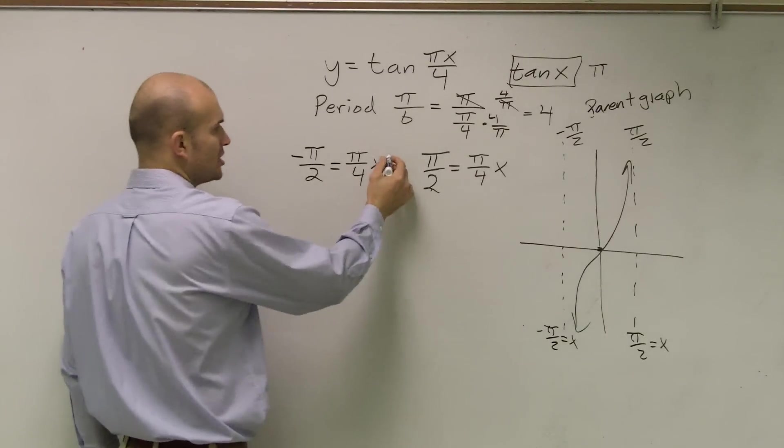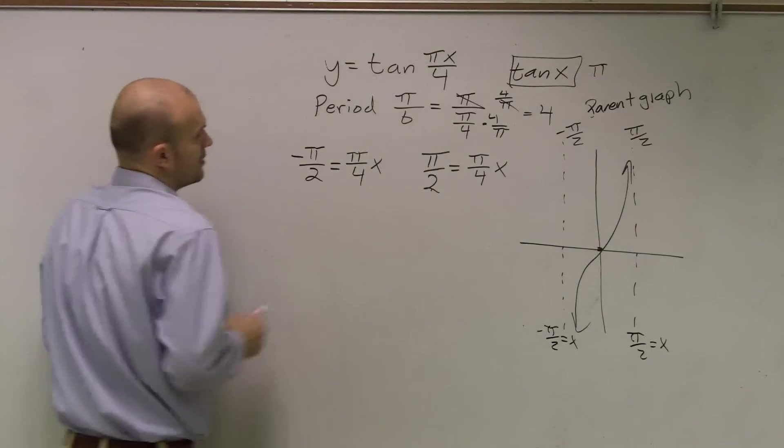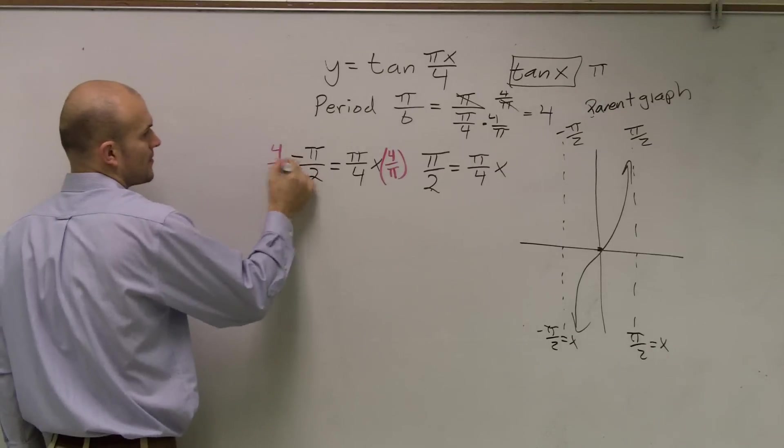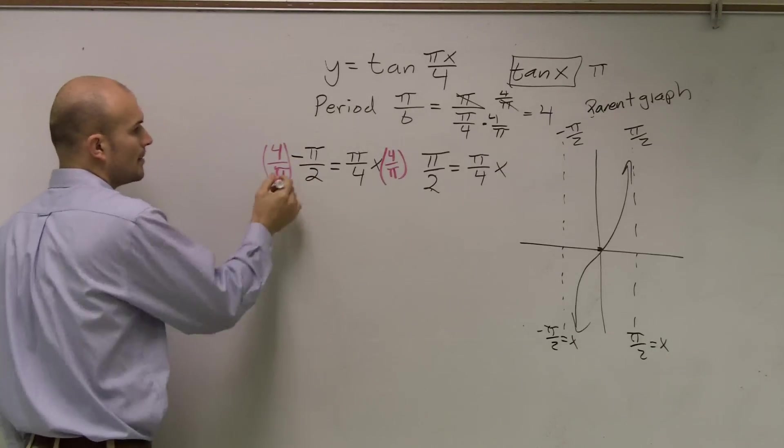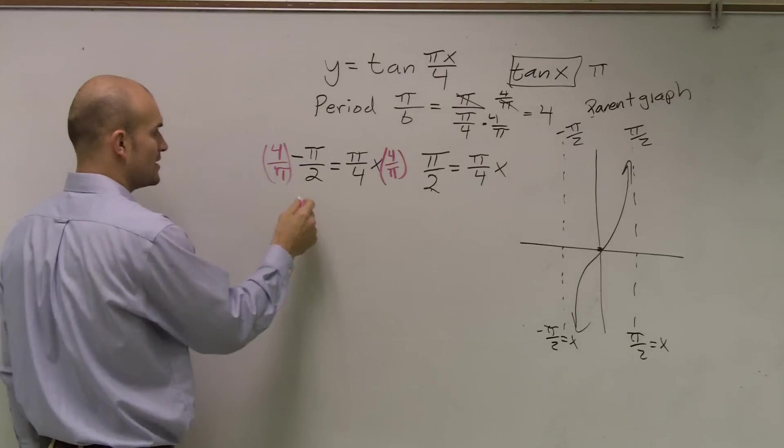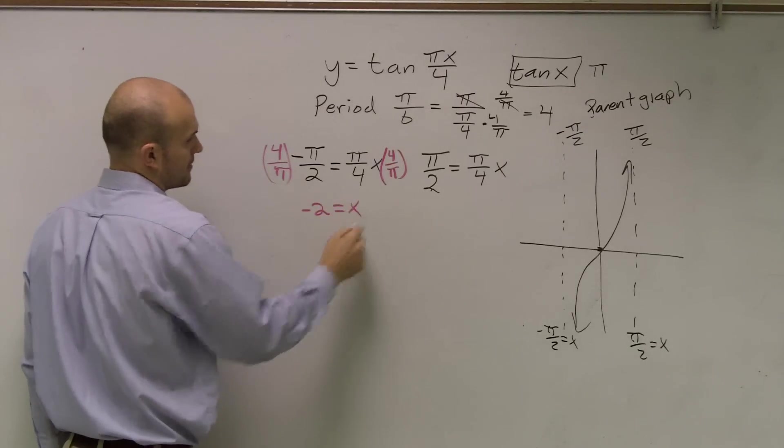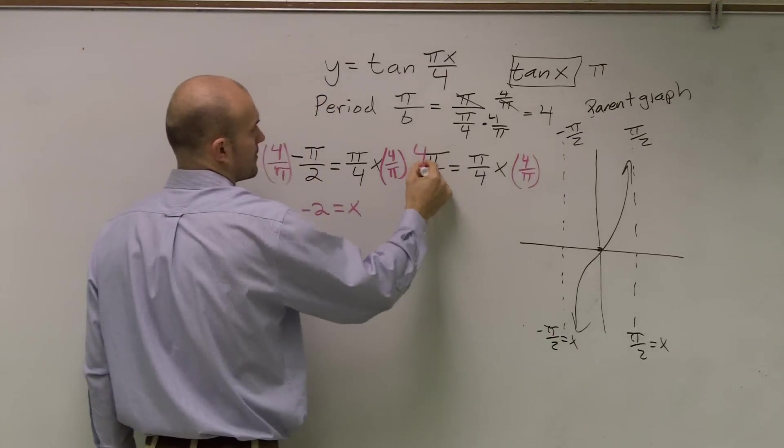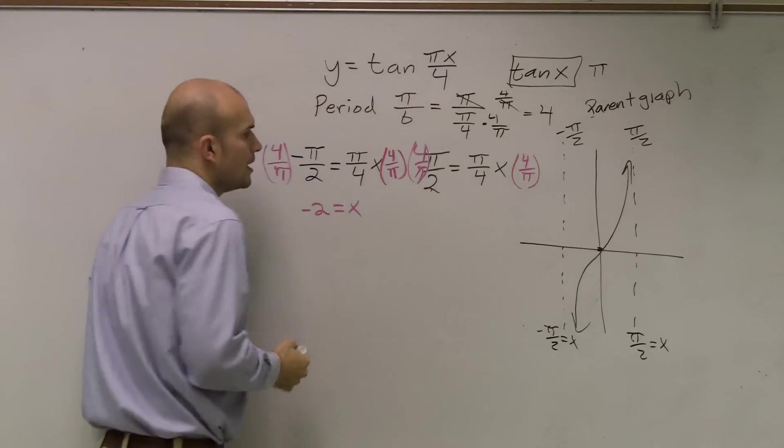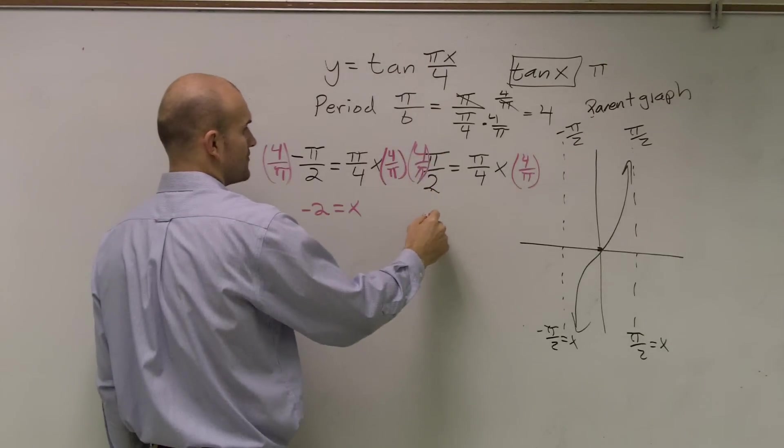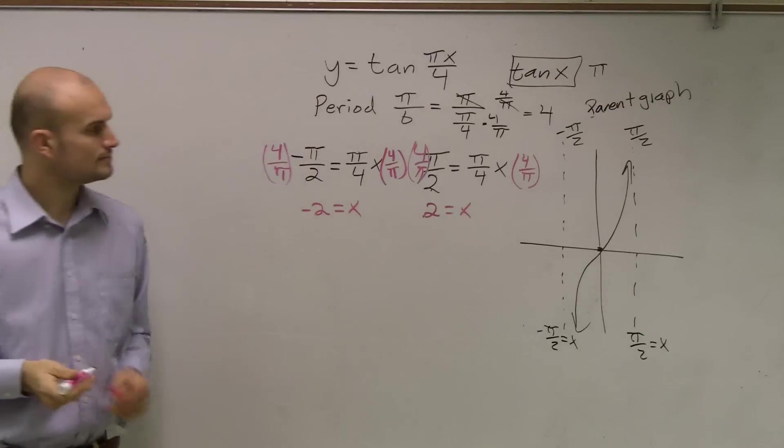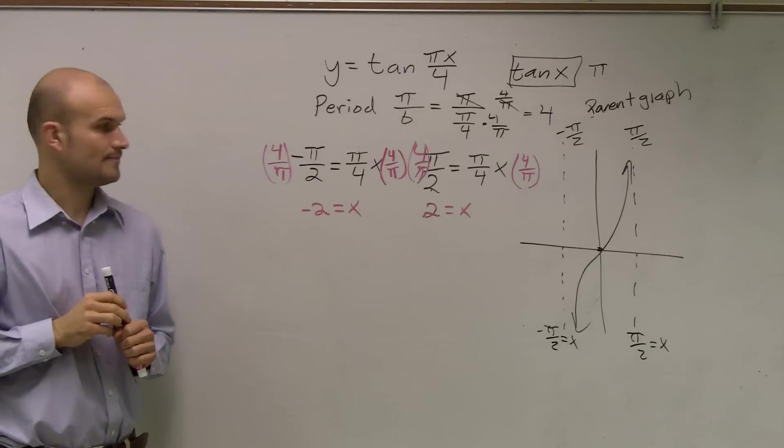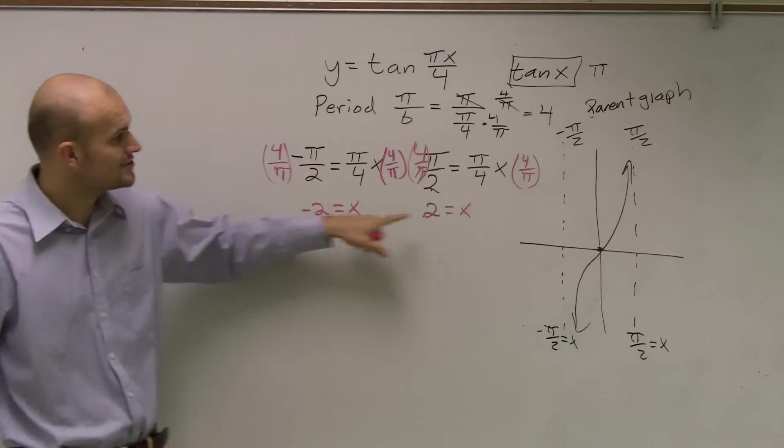So to get rid of this, I need to multiply by the reciprocal. So to multiply by the reciprocal, I'll do 4 over π on both sides. My π's will cancel out and here I'll be left with a negative 2 equals x. Here when I multiply by 4 over π, π's cancel out and I'm left with x equals 2. Does everybody follow me so far? Good. So now my new two asymptotes are at negative 2 and 2.